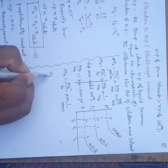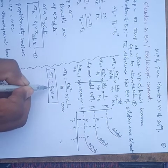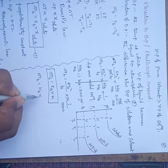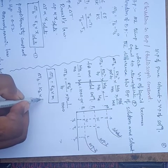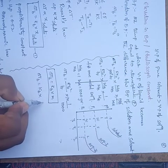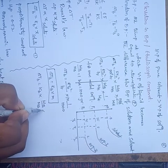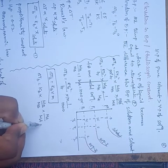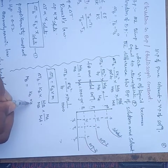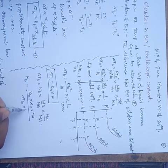The relationship between the ebullioscopic constant and molality is: delta Tb equals Kb times m, where m is molality. Expanding this: delta Tb equals Kb times (Wb/Mb) times (Ma/Wa). From this, the molecular weight of the solute is: Mb equals (Kb × Wb × 1000) / (delta Tb × Wa).